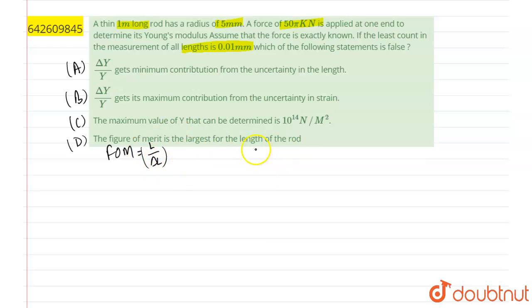The data given in the question: length of rod L = 1m, radius R = 5mm or we can say 5 × 10⁻³ m, and the value of force is 50π × 10³, and the uncertainty in length measurement delta L is 0.01.